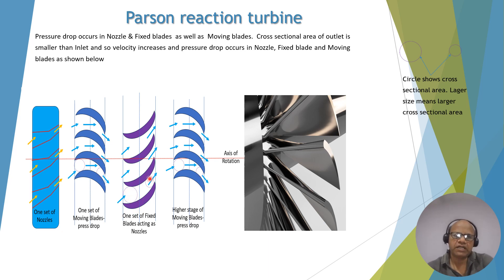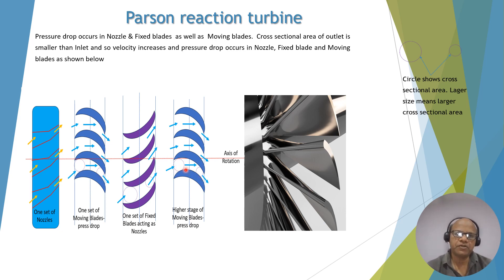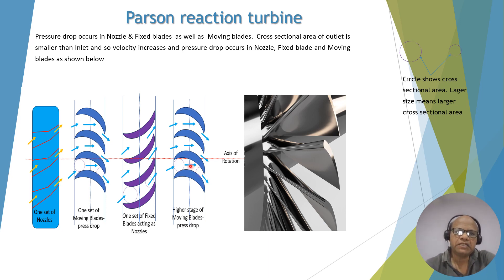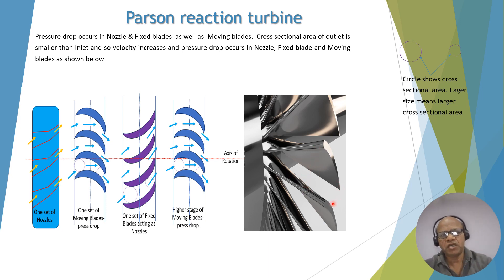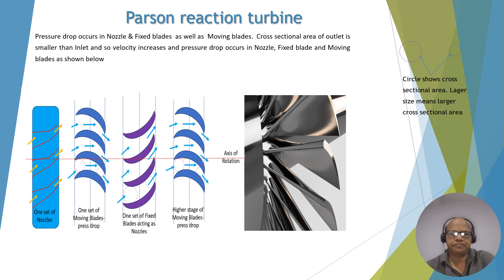The fixed blade acts like a nozzle — outlet cross-sectional area is smaller than inlet, so there is an increase in velocity and drop in pressure. In higher stages, the moving blades exhibit the same phenomenon: outlet cross-sectional area is smaller than inlet, causing increase in velocity and drop in pressure. This is called impulse and reaction because at the inlet there is impulse and at the outlet there is reaction in the moving blade, and that is why it is called an impulse and reaction turbine. From the actual photo, you can see the larger cross-sectional area and the smaller cross-sectional area — because of the smaller cross-sectional area, velocity increases in the moving blade and pressure drops, confirming why it is called impulse and reaction. Both impulse and reaction actions occur in the moving blade itself.